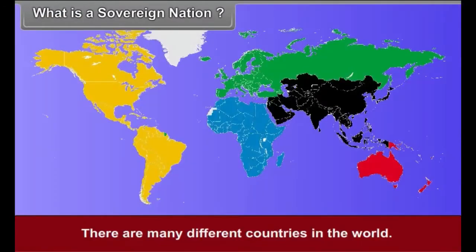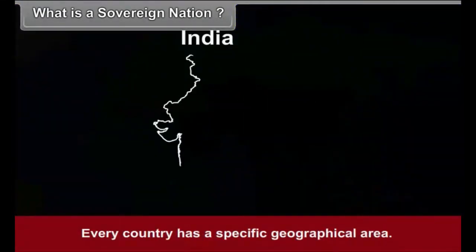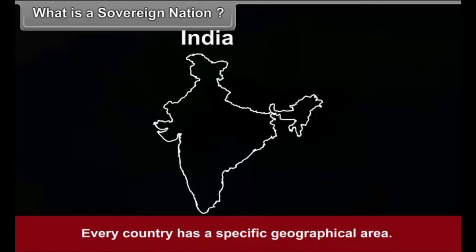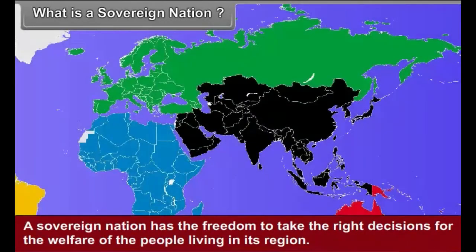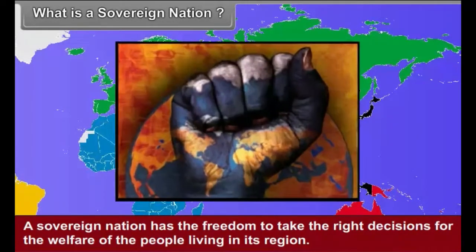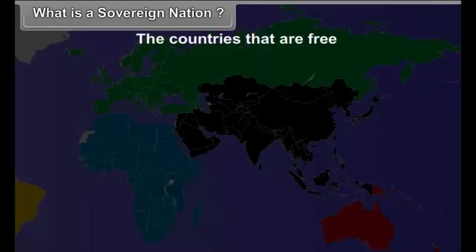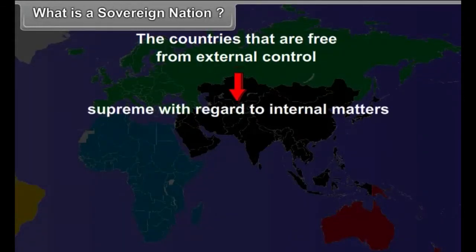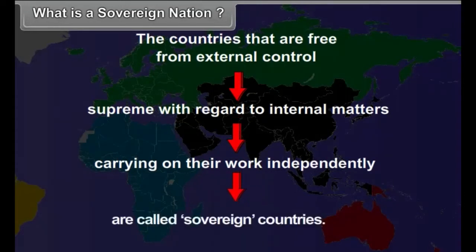What is a sovereign nation? There are many different countries in the world. Every country has a specific geographical area, and the people living in that country are its citizens. A sovereign nation has the freedom to take the right decisions for the welfare of the people living in its region. The countries that are free from external control and supreme with regard to internal matters, carrying on their work independently, are called sovereign countries.